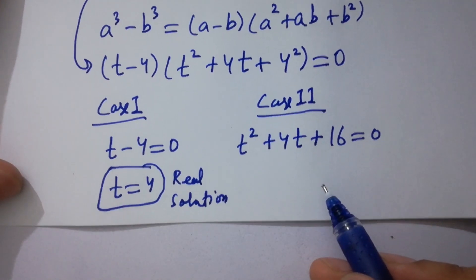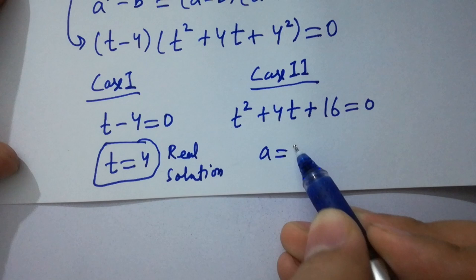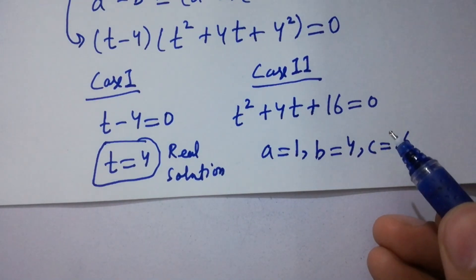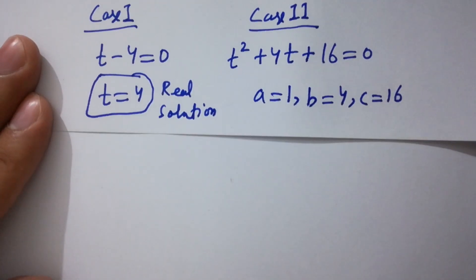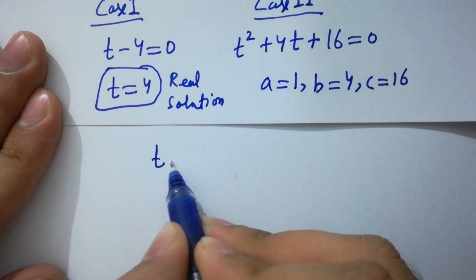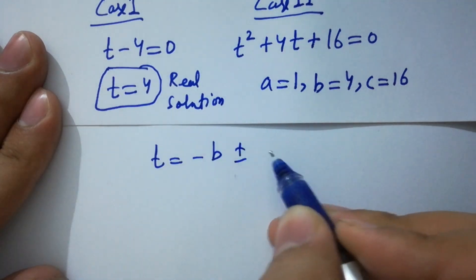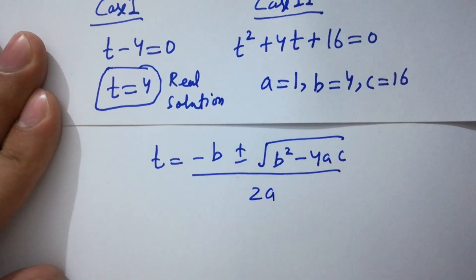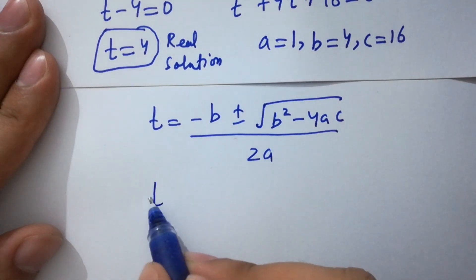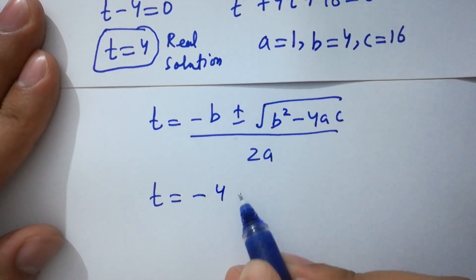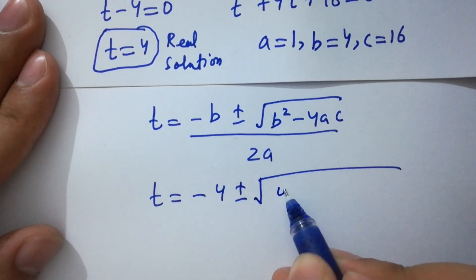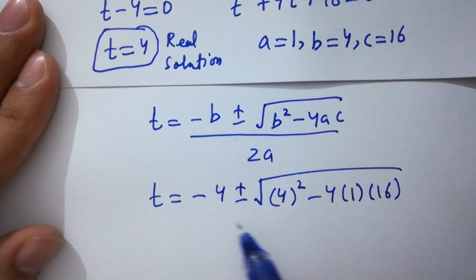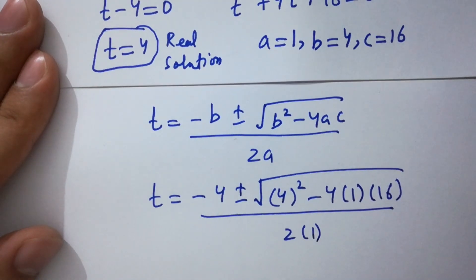For Case 2, we have a quadratic equation with a equals 1, b equals 4, and c equals 16. Applying the quadratic formula: t equals minus b plus or minus the square root of b squared minus 4ac, all over 2a. Putting in the values: t equals minus 4 plus or minus square root of 4 squared minus 4 times 1 times 16, over 2 times 1.